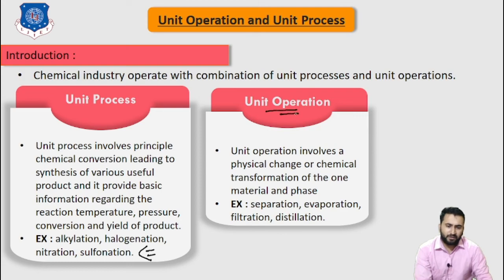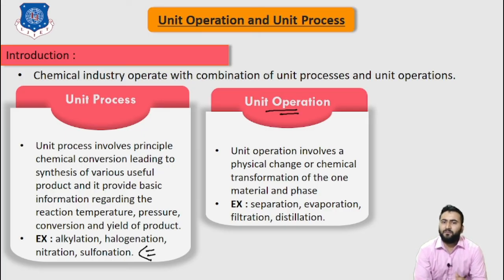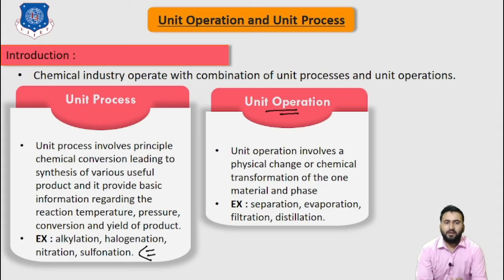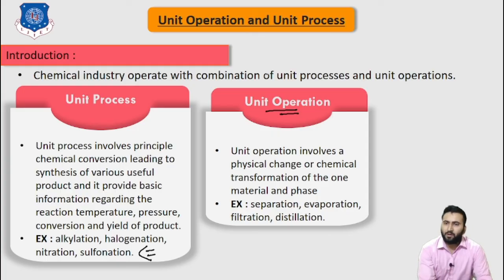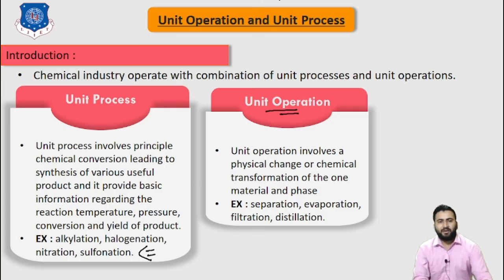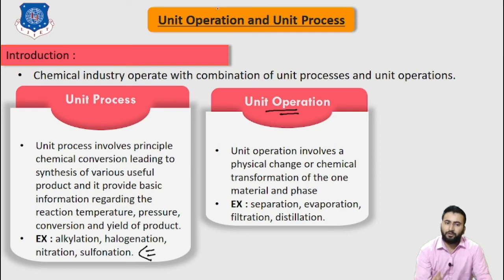Now let's discuss about unit operation. Unit operation involves physical change or chemical transformation of one material and phase. For example: separation, evaporation, filtration, and distillation — these are all unit operations. The chemical industry operates with a combination of unit process and unit operation. In any plant we are going to produce a chemical, it uses a combination of unit process and unit operation.